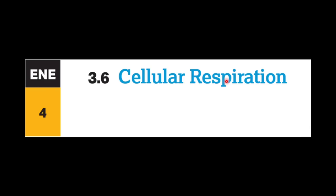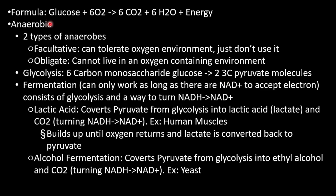The formula for cellular respiration is glucose + 6O2 → 6CO2 + 6H2O + energy. There are two types of anaerobic organisms: facultative anaerobes, which can tolerate oxygen but don't use it, and obligate anaerobes, which cannot survive in oxygen. Glycolysis always occurs — it takes a six-carbon glucose and converts it to two three-carbon pyruvate molecules. Fermentation requires NAD+ to accept electrons and consists of glycolysis plus a way to regenerate NAD+ from NADH.